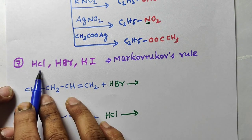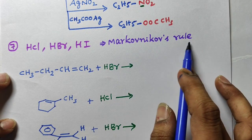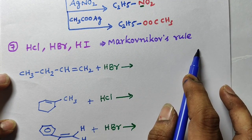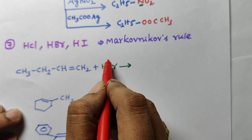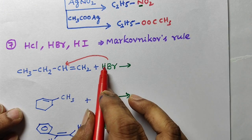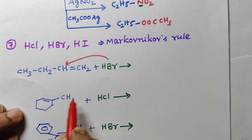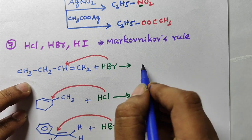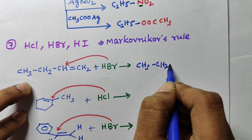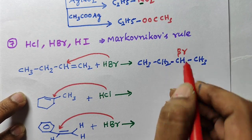Next important reagent: addition of HCl, HBr, or HI to alkene. If you take an unsymmetrical alkene, it follows Markovnikov's rule. According to Markovnikov's rule, the halide (Br⁻ or Cl⁻) will attack at the less hydrogen-containing double-bonded carbon. For example, CH3CH2CH=CH2 — bromine will attack at the carbon with less hydrogens, giving the Markovnikov product.